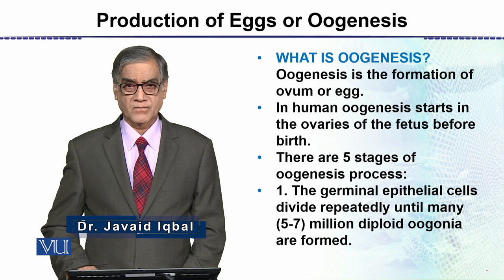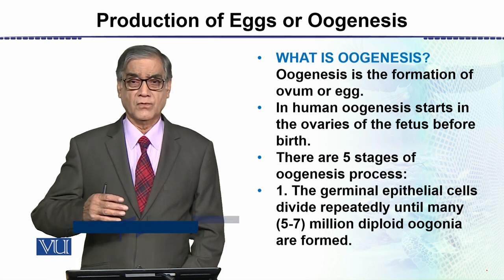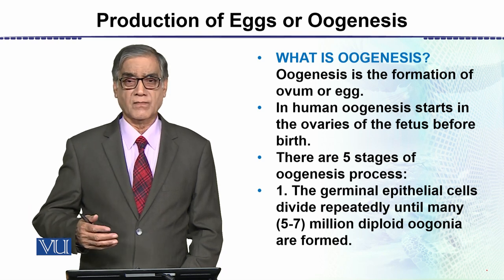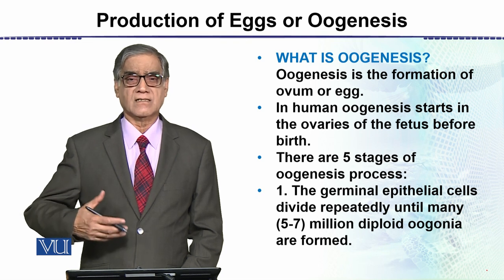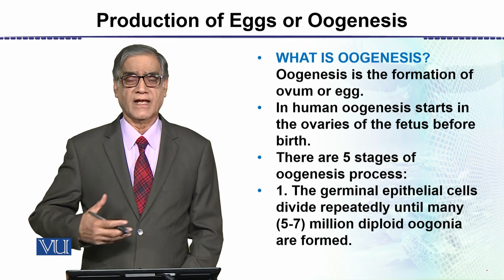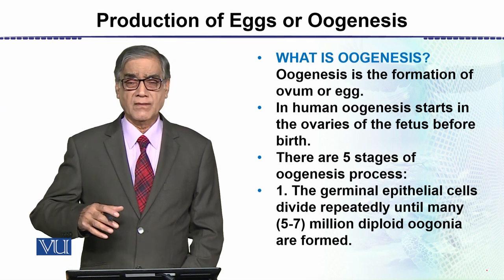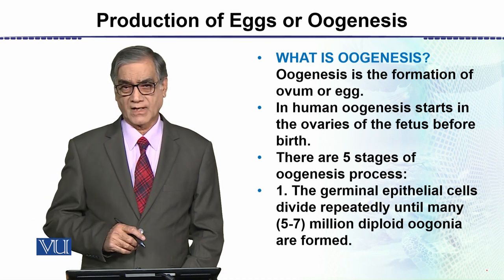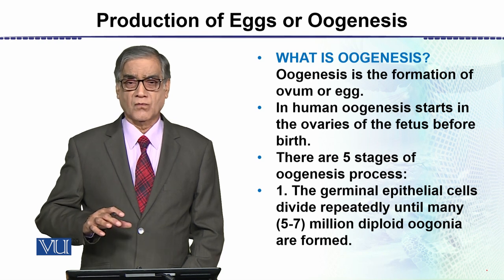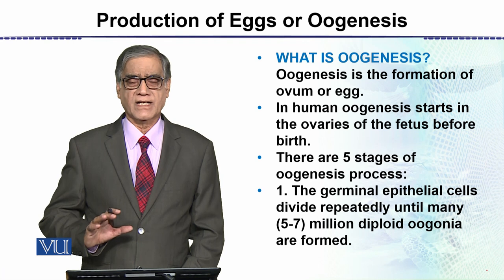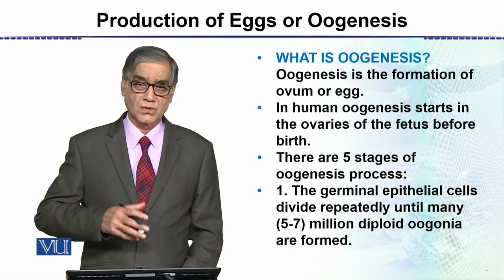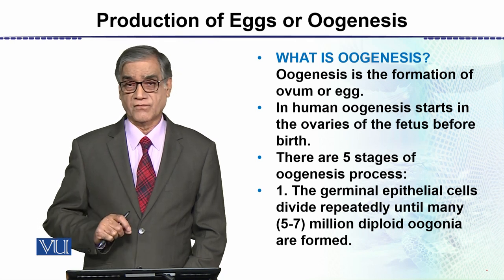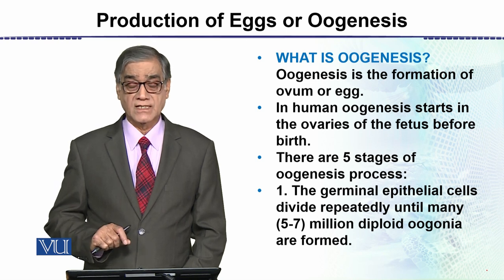Oogenesis starts before birth — that is, when the female child is in the fetal condition, egg production and ovum formation begins. By the time of birth, there are many cells destined to give rise to eggs, and ultimately at the time of puberty there are only approximately 500 eggs remaining which then have to mature. So in human oogenesis, which starts in the ovaries of the fetus before birth, there are five stages.